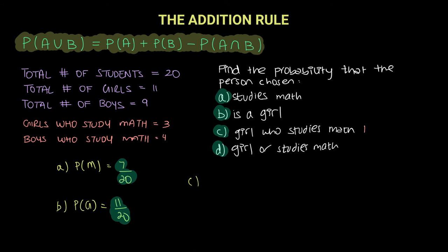So if you can see here, this is technically asking us to find the intersection of a girl who studies math, which means she's a girl and she studies math—and meaning intersection. Well we have that right over here. A girl who studies math is basically 3.